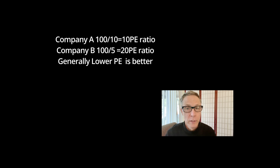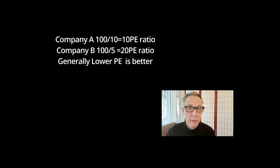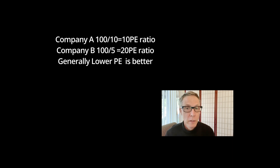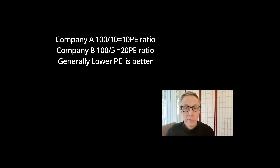If we had no other information at all, Company A has a price-to-earnings ratio of 10 and Company B a price-to-earnings ratio of 20 — you're basically paying twice as much for Company B. Assuming there aren't any other extenuating factors that make Company B more desirable, Company A is clearly the better value.